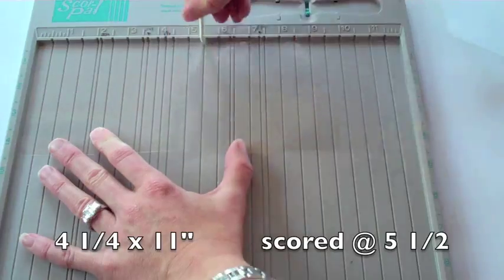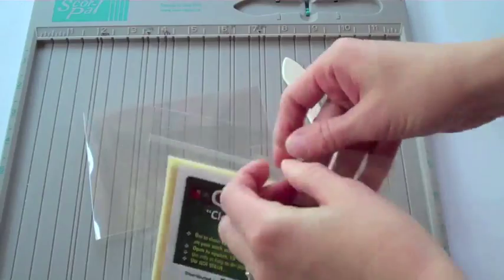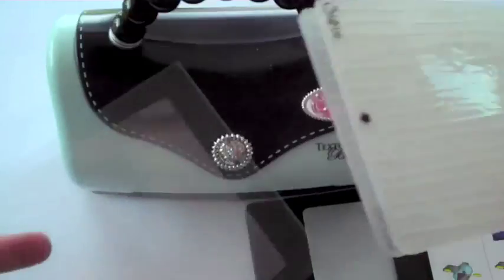Go ahead and score your four and a quarter by eleven acetate in half at five and a half with a nice crisp edge. I take an anti-static rag to go over to keep the glitter in check.